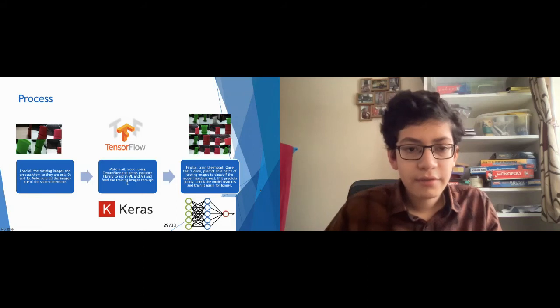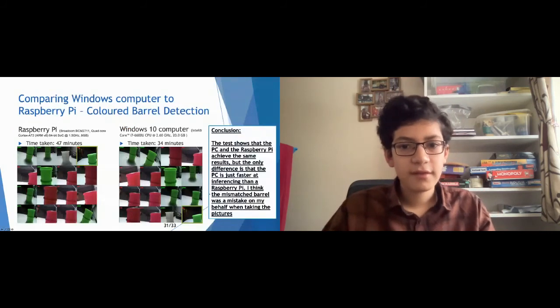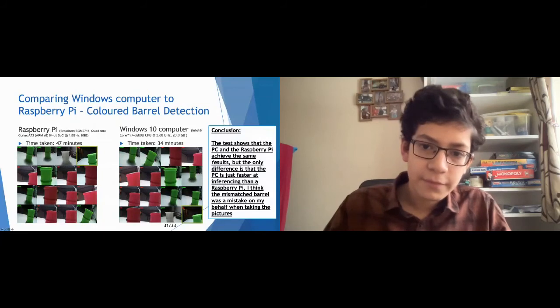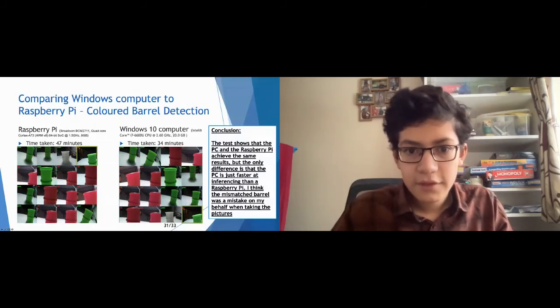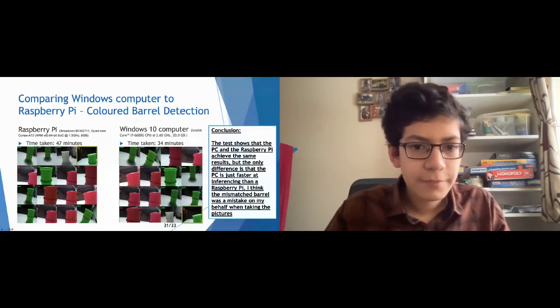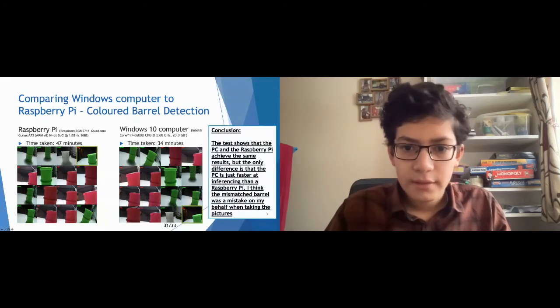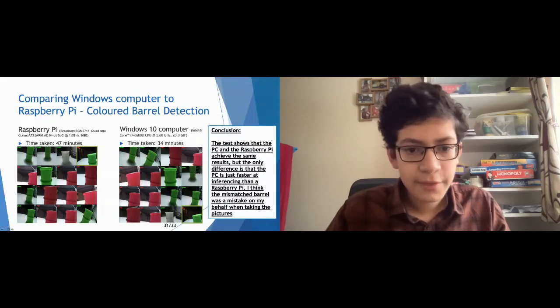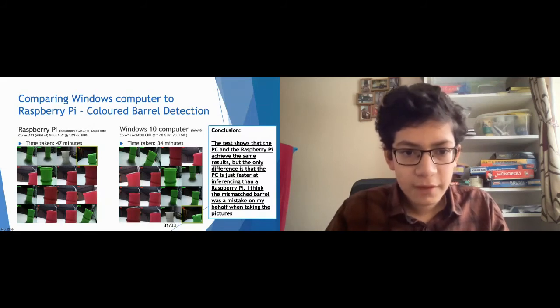So, now I compared a Windows 10 computer and a Raspberry Pi, Raspberry Pi 4. So, the conclusion I got from these tests showed that the PC and the Raspberry Pi achieved the same results. But the only difference is, the PC is faster at inferencing than the Raspberry Pi, about 30 minutes faster than the Raspberry Pi. And I think the mismatched barrel was a mistake on my behalf, when taking the pictures. And what's really interesting here, is that this barrel is the same as this one, and they both detect it as red.